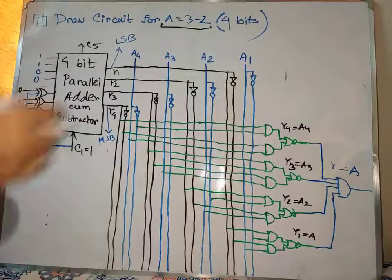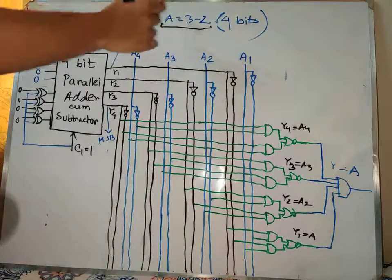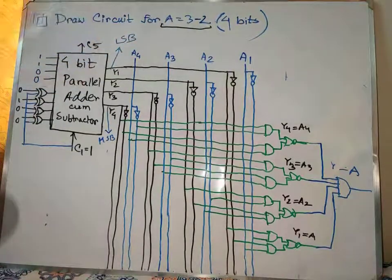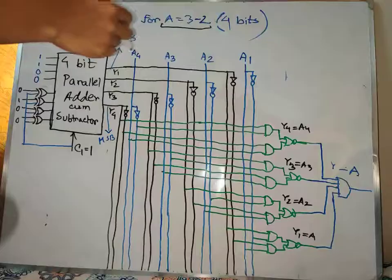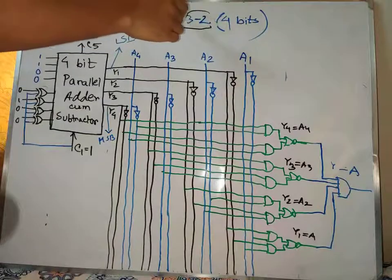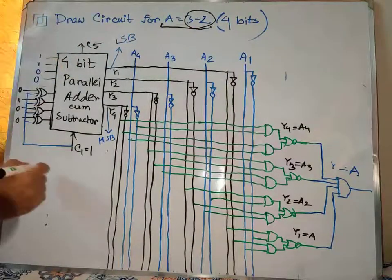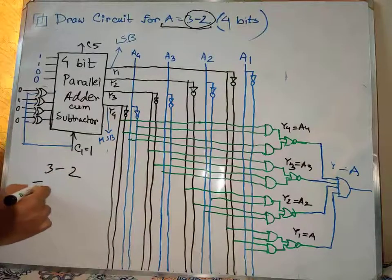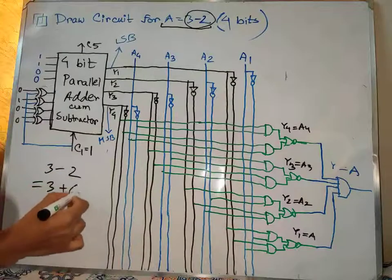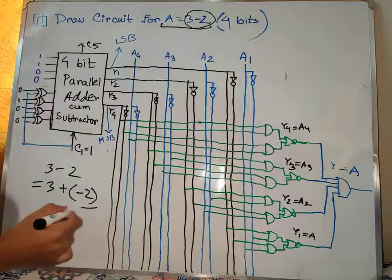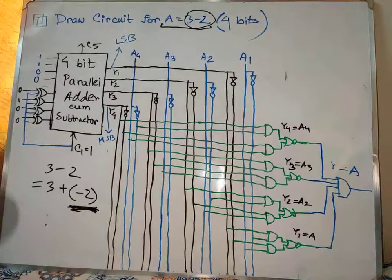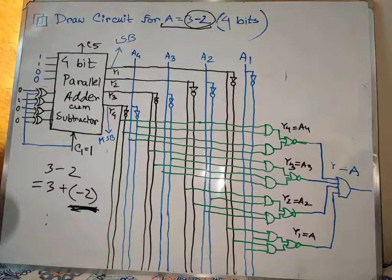If you look at this first, it is equal, so definitely it is something compiler-related. The compiler-related expression is 3 minus 2. We have to say that 3 minus 2 is 3 plus negative 2. We have to look at this minus 2 as a negative number, so we have to get the negative version.